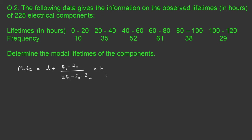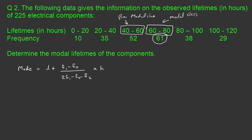Our first aim is to find the modal class. The modal class is the class with the maximum number of frequencies. By looking at the data, I can easily identify that the maximum frequency is 61, which occurs in the class 60 to 80. The class preceding the modal class is 40 to 60, and the class succeeding the modal class is 80 to 100.